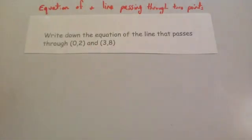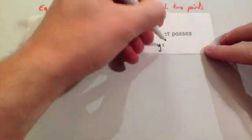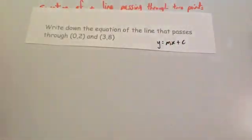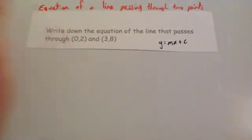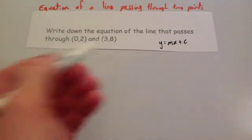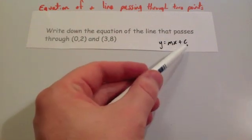The equation of a line comes in the form of y equals mx plus c. That's the equation of any line, y equals mx plus c. We need to work out two things: one, the gradient, and two, the y-intercept.